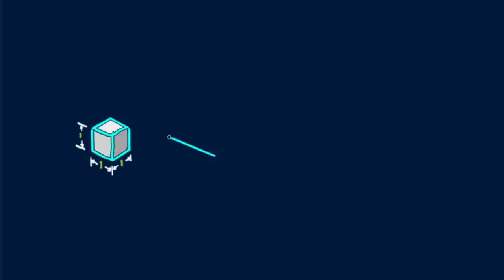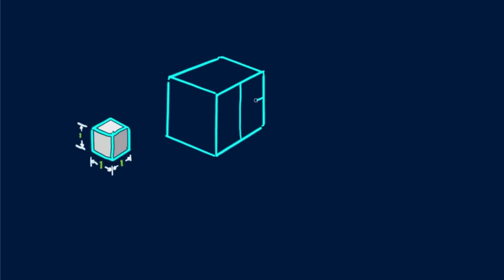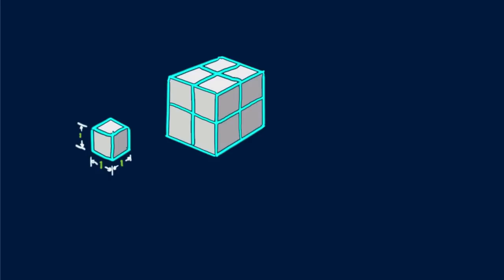To understand this relationship, consider the simplest example of a solid cube of matter — one centimeter on the side, say a sugar cube. We'll compare this with a cube of the same material that has double the linear dimensions: a cube two centimeters on each side.